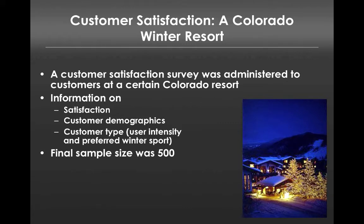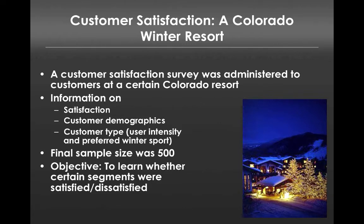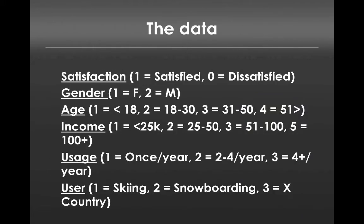The final sample had about 500 people, and the objective was to learn whether certain segments were satisfied or dissatisfied with their experience. The data we have are: satisfaction, coded as one for satisfied and zero for dissatisfied; gender; age; income; usage frequency; and user type — skier, snowboarder, or cross-country skier.